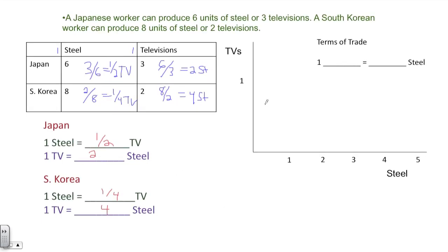Now, a little trick that I like to use is to put these numbers on what I call a per unit opportunity cost PPF. So I'll take in bullet point one TV on the y-axis, and on the x-axis will be the cost. So one TV will cost Japan two steel. One TV will cost South Korea four steel.